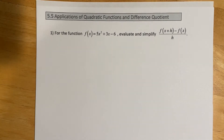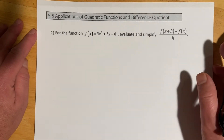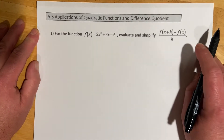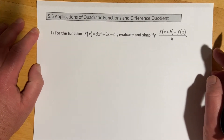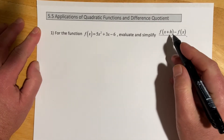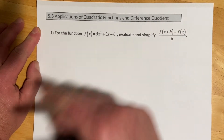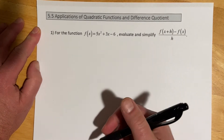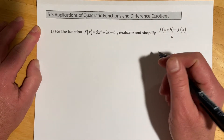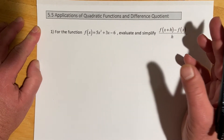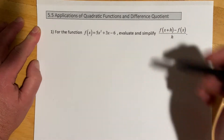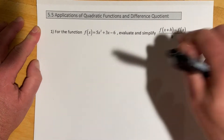This is Derek and Ellie and this is section 5.5, applications of quadratic functions and the difference quotient. This is the difference quotient we saw back in chapter one or two with linear equations - it's back again with quadratics. To evaluate the difference quotient, remember this formula is going to eventually lead to first quarter calculus, but right now we're using it more as an exercise in function notation.